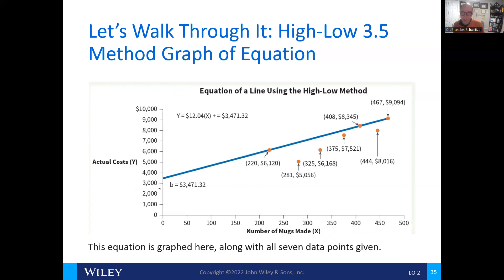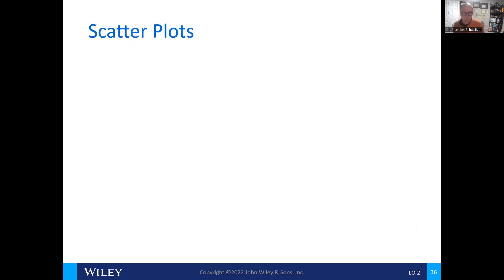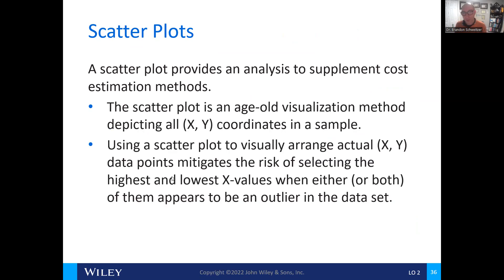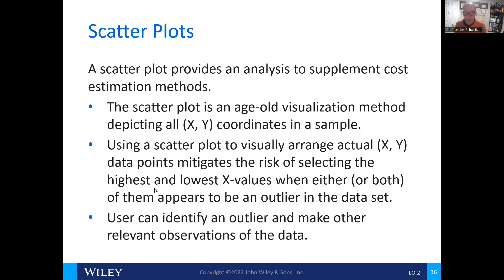This helps us to determine a plausible equation where we take the $12.04 times the level of output plus the fixed cost to find the total cost. Using the high-low method, here's the line of our total cost. Another method is by using scatter plots. Scatter plots help us to determine an estimation where the line is drawn in between the high and low points. It helps us to visualize a range of data where there are outliers in the information, and users can identify outlier information by making relevant observations in the data.